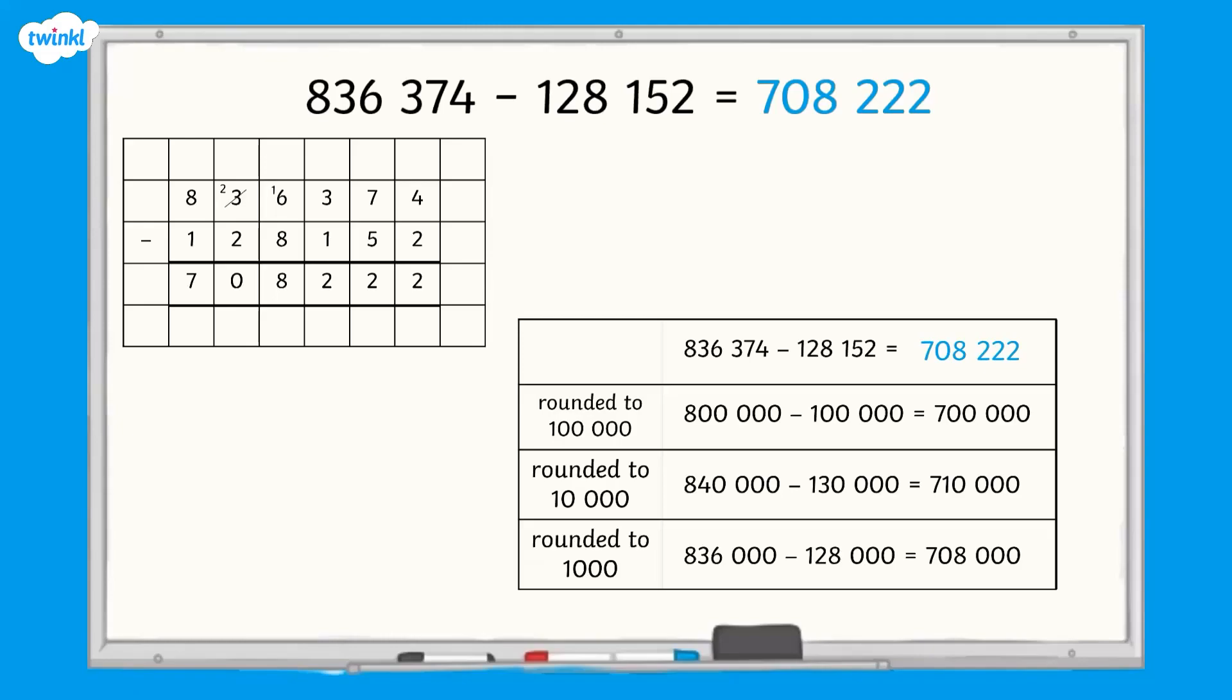When you round to estimate your answer, you only need to do one approximate mental calculation, but you'll need to choose which multiple you should round to. Remember, the smaller the place value we round to, the more accurate our estimate will be, but it can make the mental calculation more difficult and slower.